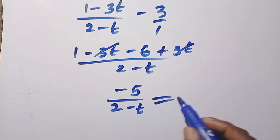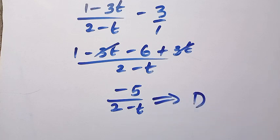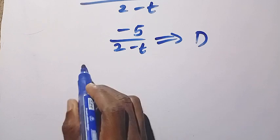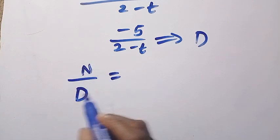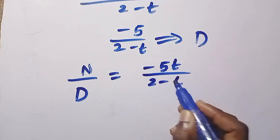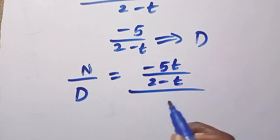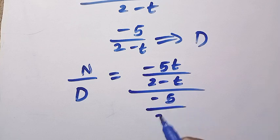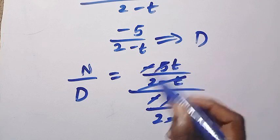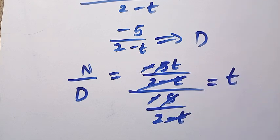Now dividing the numerator by the denominator: (minus 5t over (2 minus t)) divided by (minus 5 over (2 minus t)). The (2 minus t) terms cancel, and the 5s cancel, leaving us with t. So this expression simplifies to t.